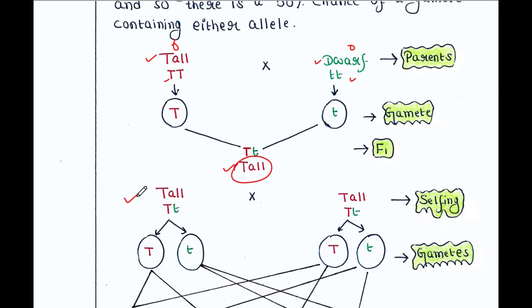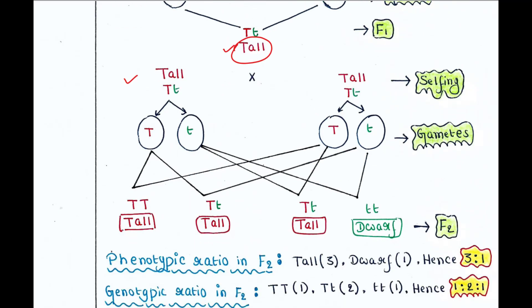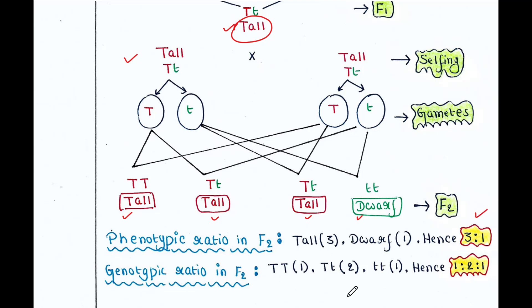Mendel then self-pollinated the F1 plants — this is called selfing or self-pollination. The self-pollination resulted in three tall plants and one dwarf plant. He called these the F2 generation. The tall and dwarf traits were identical to their parental type and did not show any blending — all the offspring were either tall or dwarf. None were of in-between height. The phenotypic ratio in F2 was 3:1, since we got three tall plants and one dwarf plant.